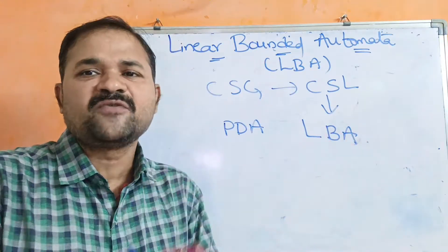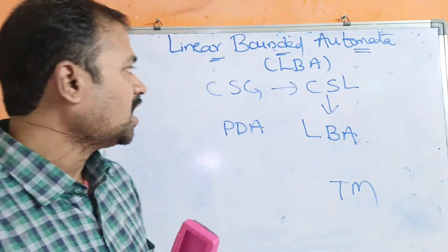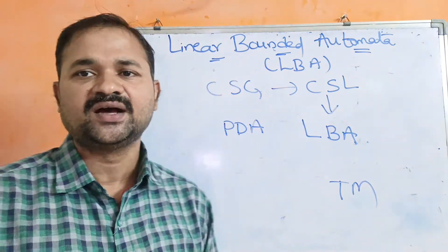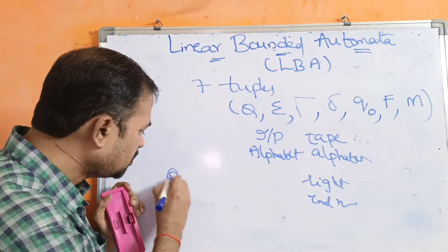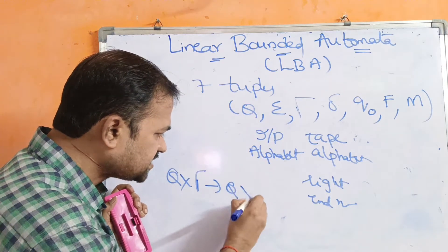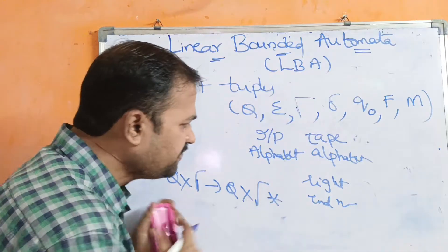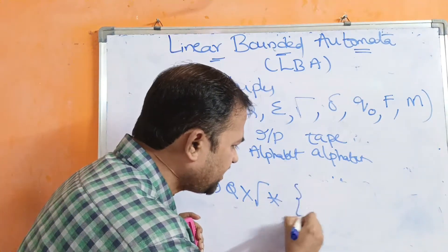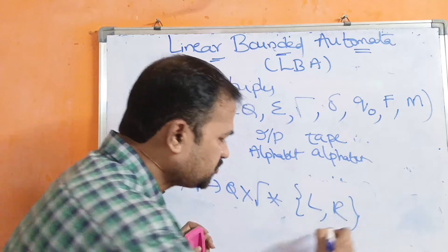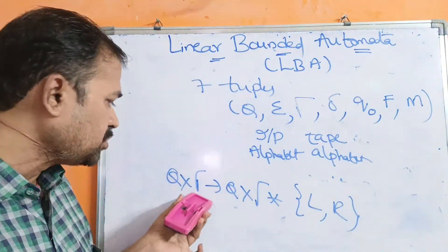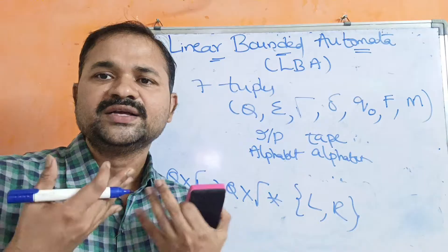A linear bounded automata is more powerful than pushdown automata, and it is less powerful than the Turing machine. Now let us discuss how to define linear bounded automata.